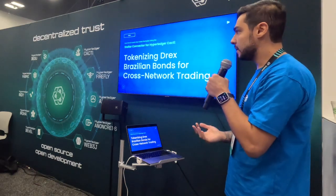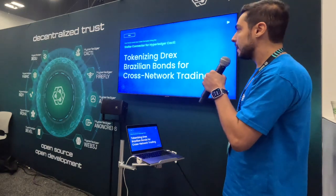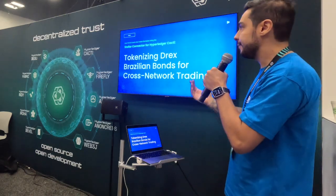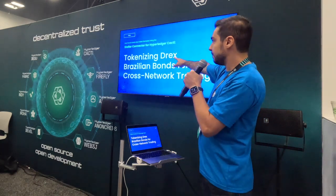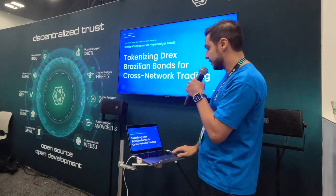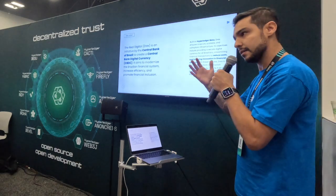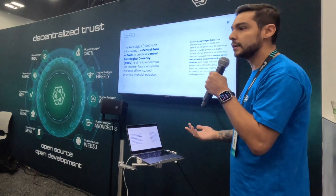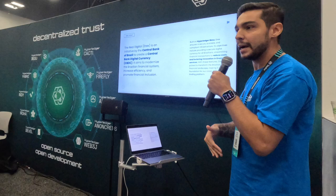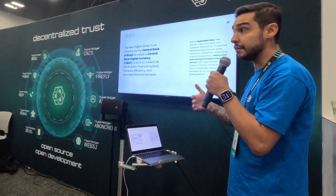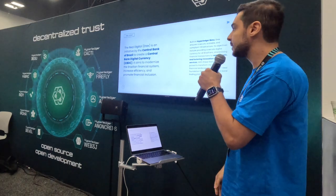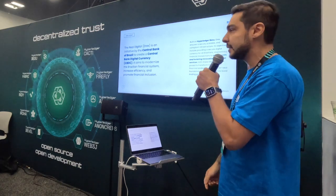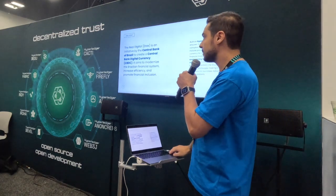Now here is the use case I really want to present today — a use case related to a CBDC project. What we are trying to achieve is to tokenize a Brazilian bond for cross-network trading using Cacti and the Stellar connector. An important term here is Drex — the Central Bank of Brazil is issuing a CBDC right now called the Drex platform. It's been in pilot mode for a couple of years, and we're hoping it goes to production in the next years. They are using Hyperledger Besu for infrastructure behind the scenes, which is why we are considering Drex in this specific use case.